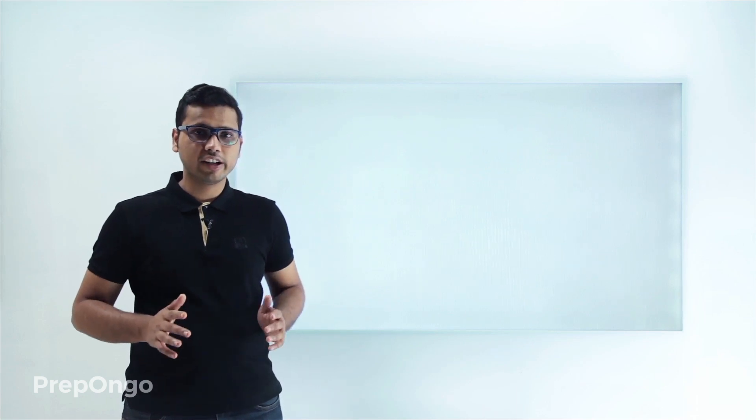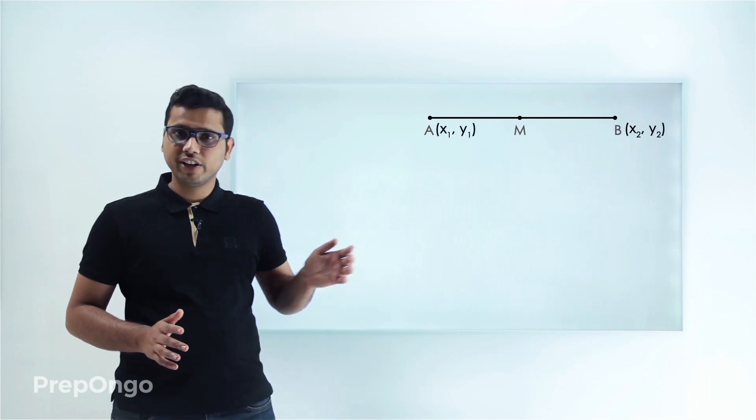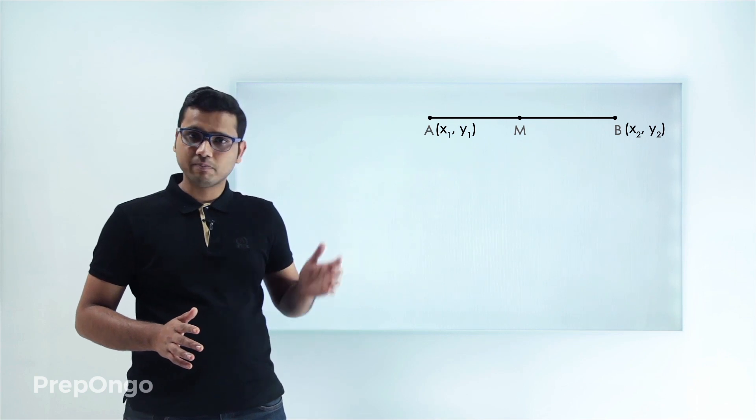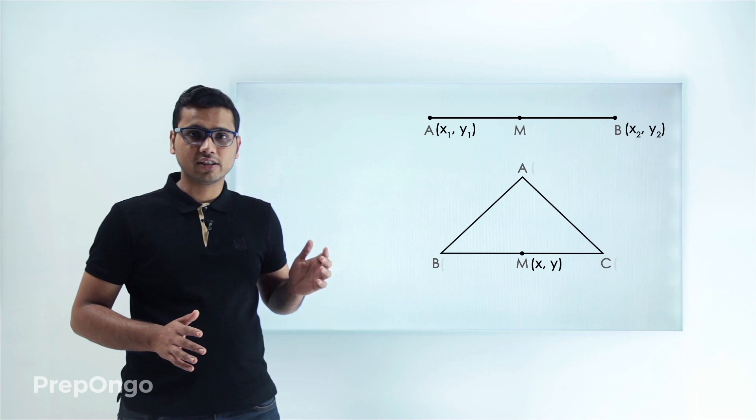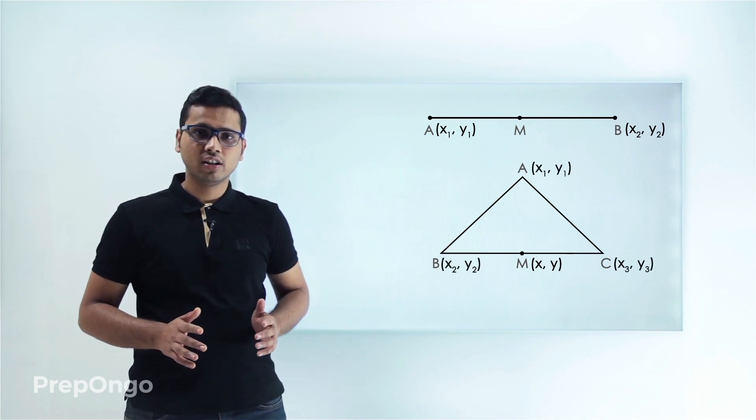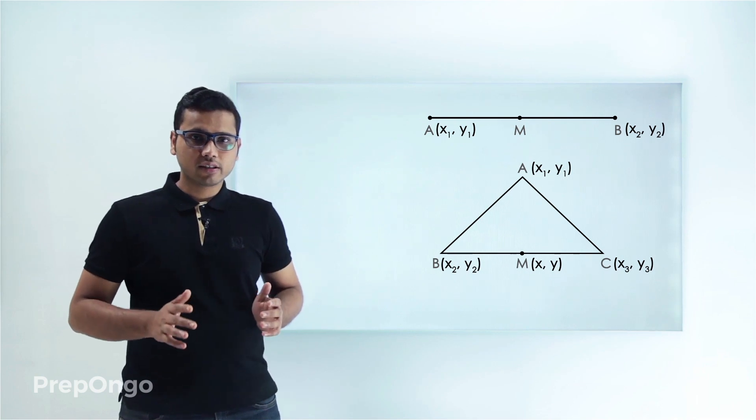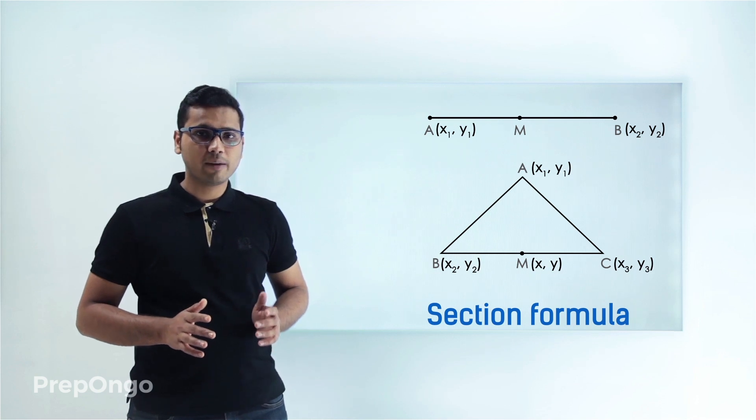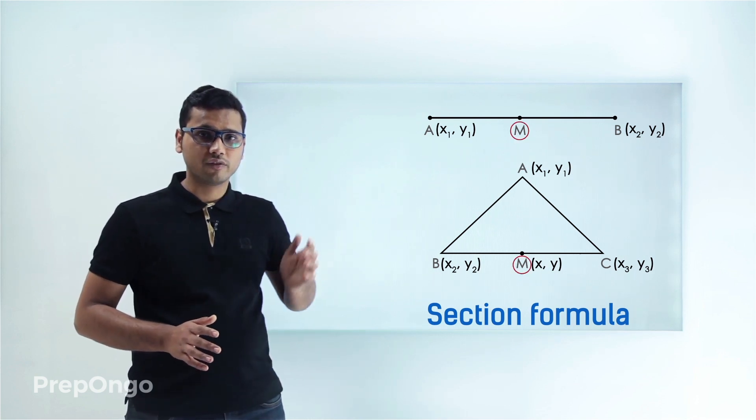If we have to calculate the midpoint of a line segment AB whose coordinates are given, or find the coordinates of the median of a triangle whose vertices are given, how do we calculate them? We'll learn about the section formula and how to apply it to find the coordinates.